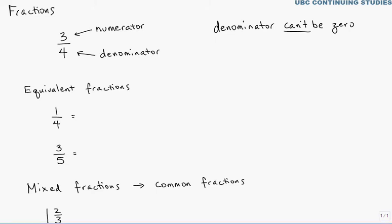The number on the top of the bar is called the numerator, and the number on the bottom is called the denominator. And really there's a link between everyday language and these terms.